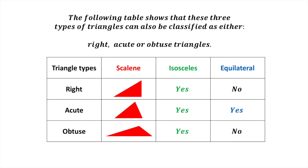In the second column, an isosceles triangle can also either be a right, an acute, or an obtuse triangle. Here are some examples of isosceles triangles that are also either right, acute, or obtuse triangles.